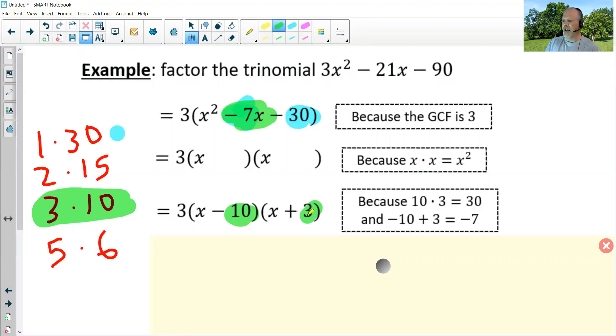Now remember that I need negative seven. And the only way to get that is with a positive three minus 10, because three minus 10 is negative seven. Now to check your work, you can always multiply your answer.